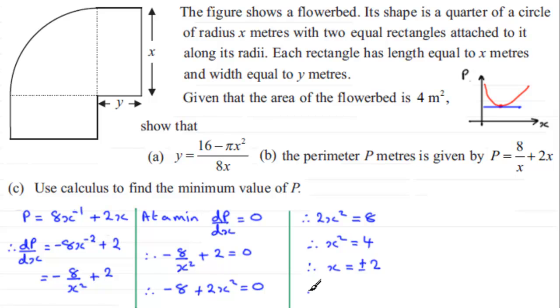But we know that x, being a length, has to be positive, has to be greater than 0. So what that means now is that therefore x must be equal to 2.